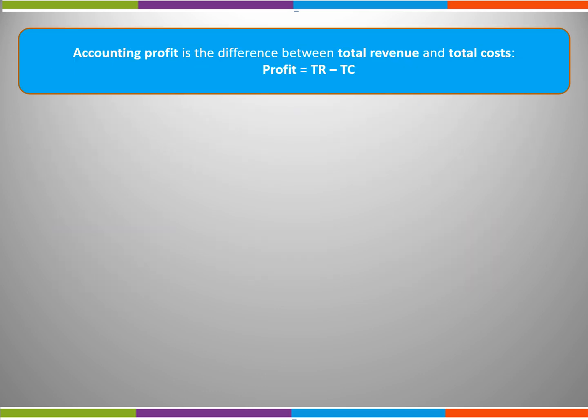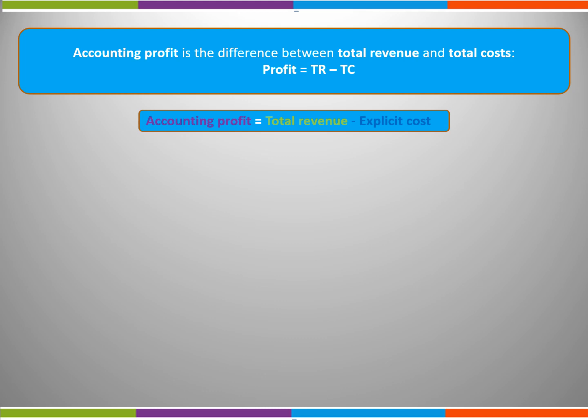As well as having new types of cost, we also have new terms for profit. Accounting profit is the difference between total revenue and total costs. We can use the term explicit cost instead of total cost, so we have a new formula: accounting profit equals total revenue minus explicit cost.